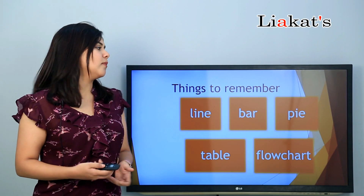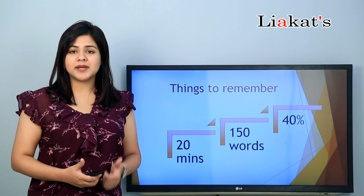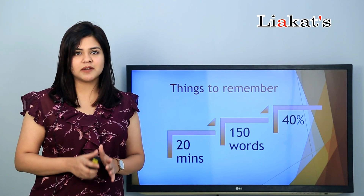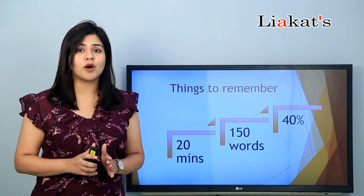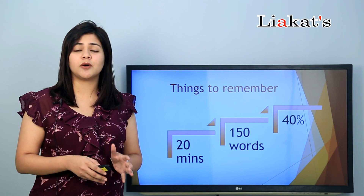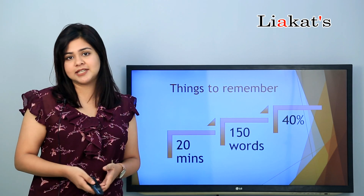Sometimes you can have a combination — for example, a line graph together with a pie chart, a bar chart, or a table — so there can be a combination of one, two, or more. We need to remember that we get 20 minutes to cover at least 150 words, and also 40% of the marks will go with the overall writing test.